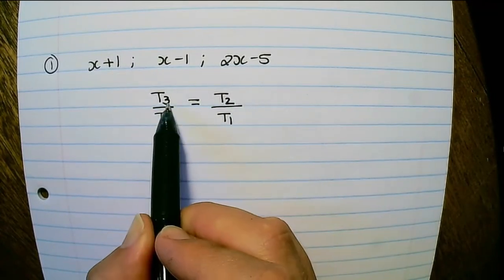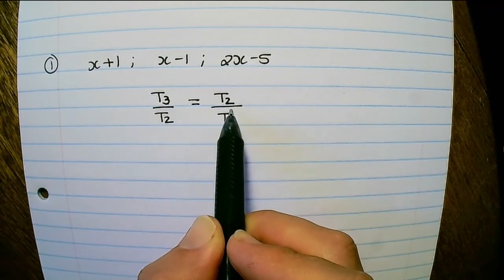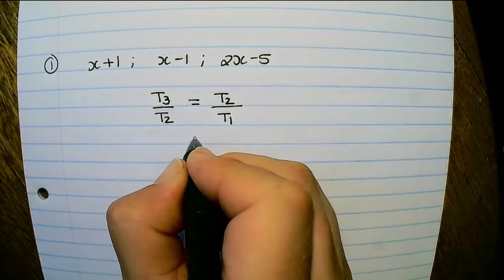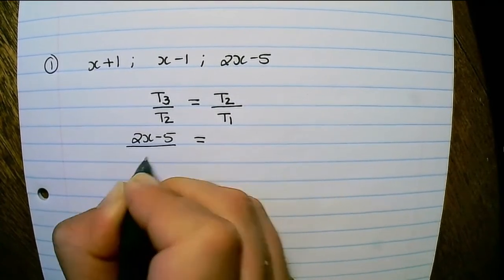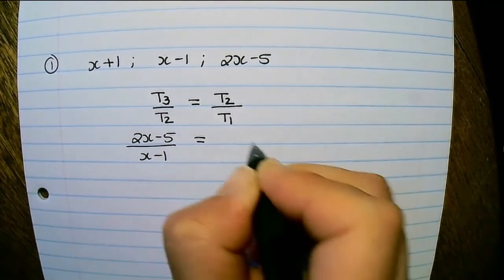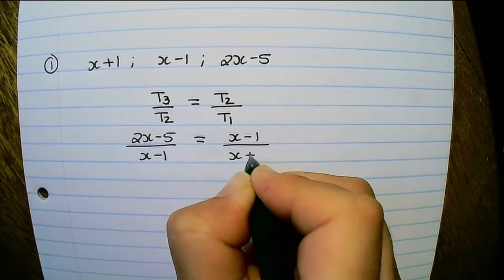So that means that term 3 divided by term 2 would be equal to term 2 divided by term 1. So that will be 2x minus 5 over x minus 1 is equal to x minus 1 divided by x plus 1.